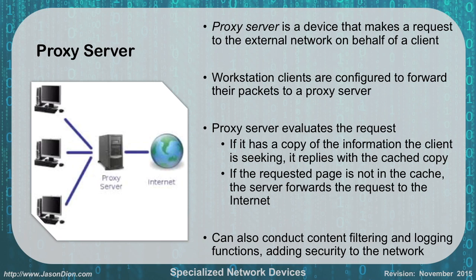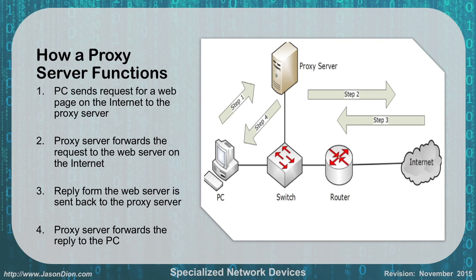Another thing a proxy server does is prevent attackers from mapping out your network. Attackers will sometimes scan your network to enumerate what it looks like from the outside, but a proxy server helps prevent that — they're going to see the proxy server, not everything behind it. In this network, you would see one machine, not three. When a PC makes a request to the proxy server for google.com, the server forwards that request to the internet, gets the information, passes it back, and makes a log of the time, duration, and levels visited. If it has a local copy, it gives you that, saving bandwidth on your WAN link.